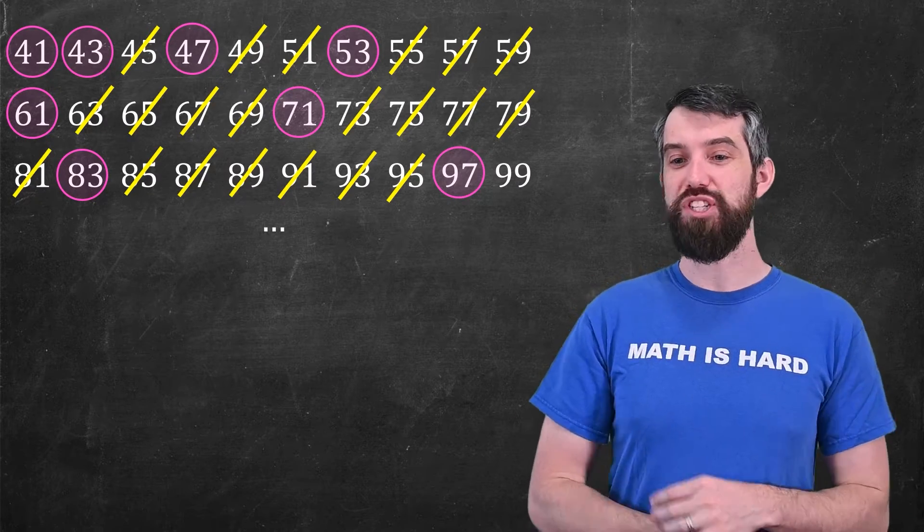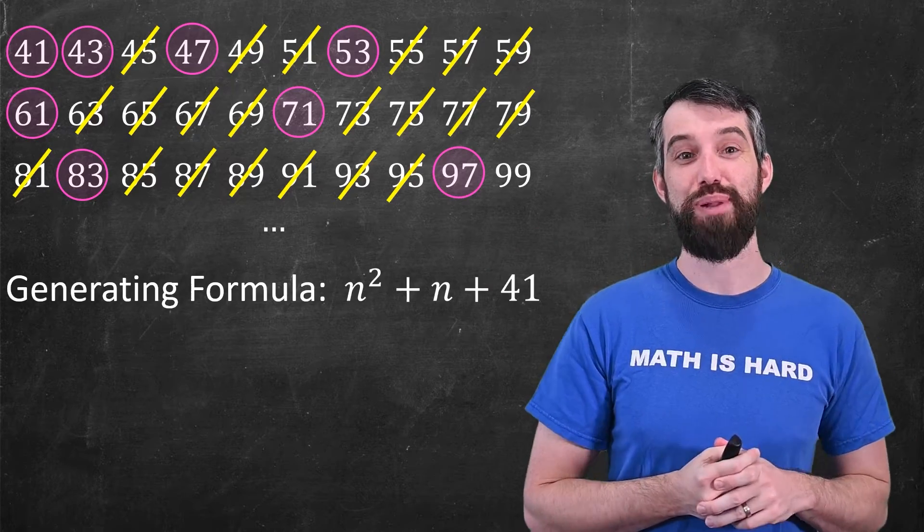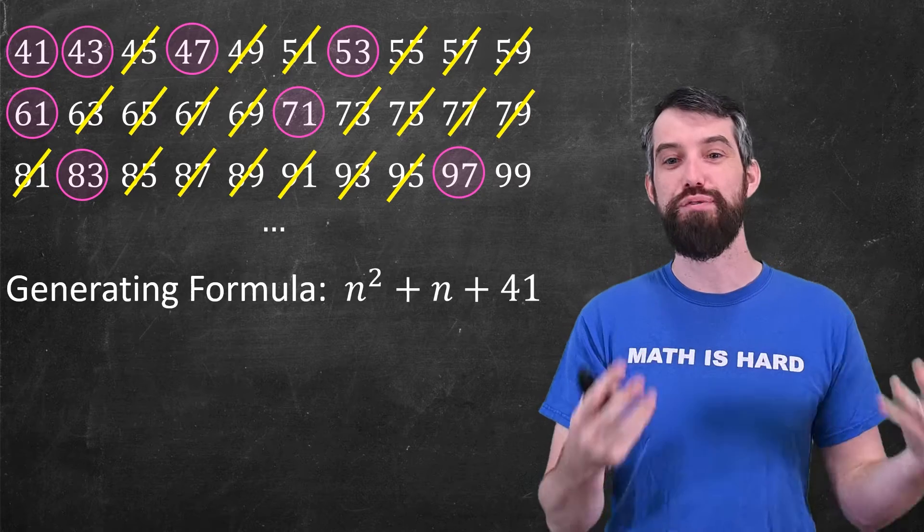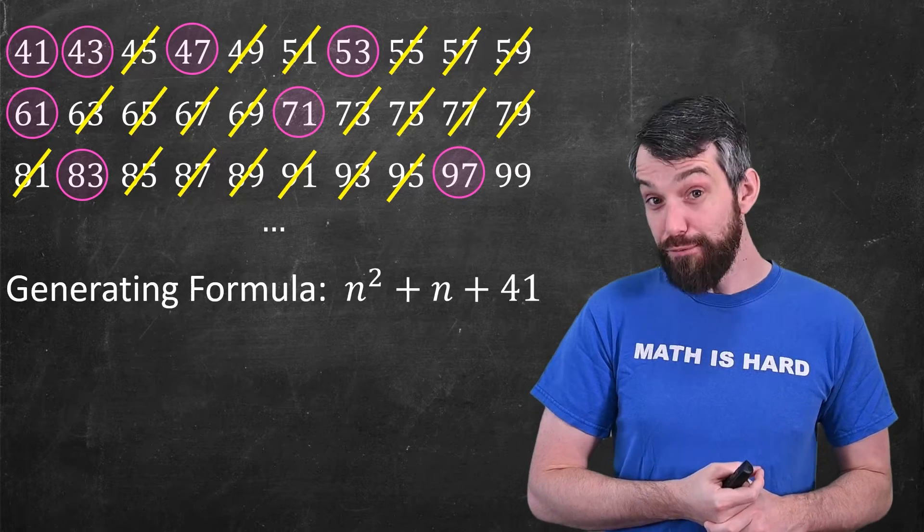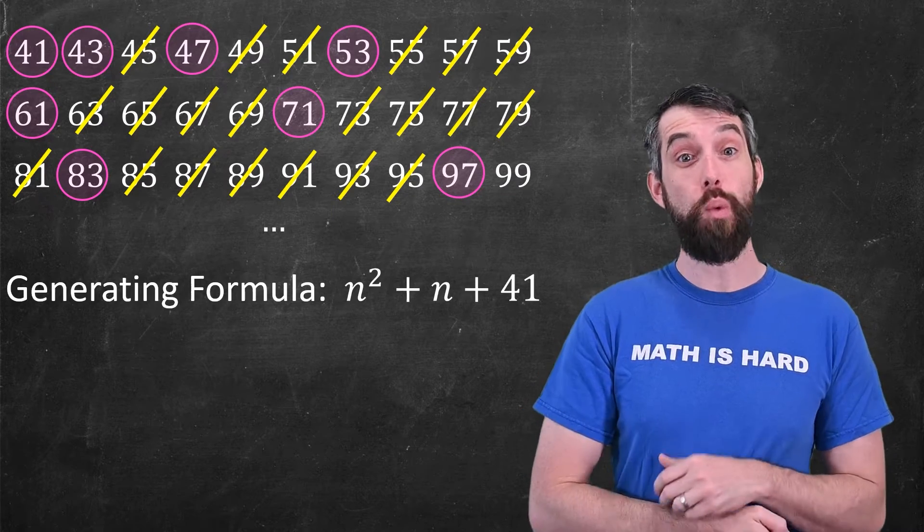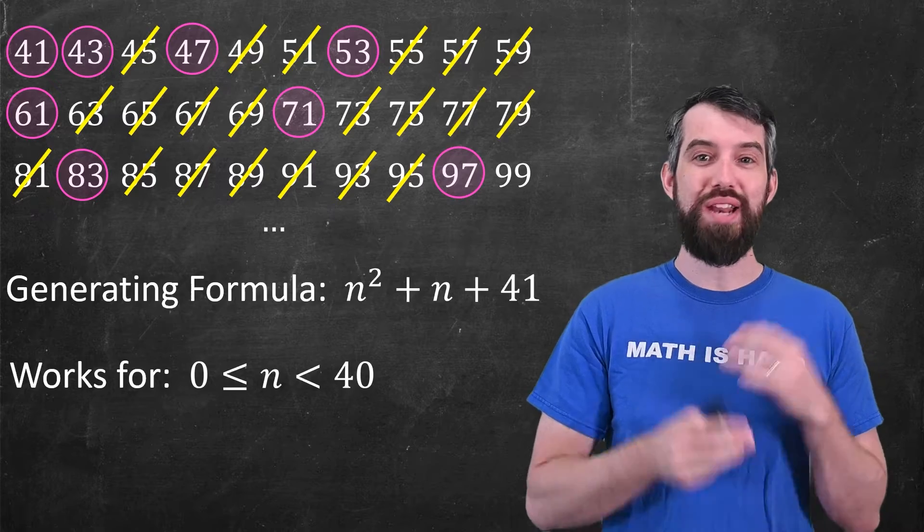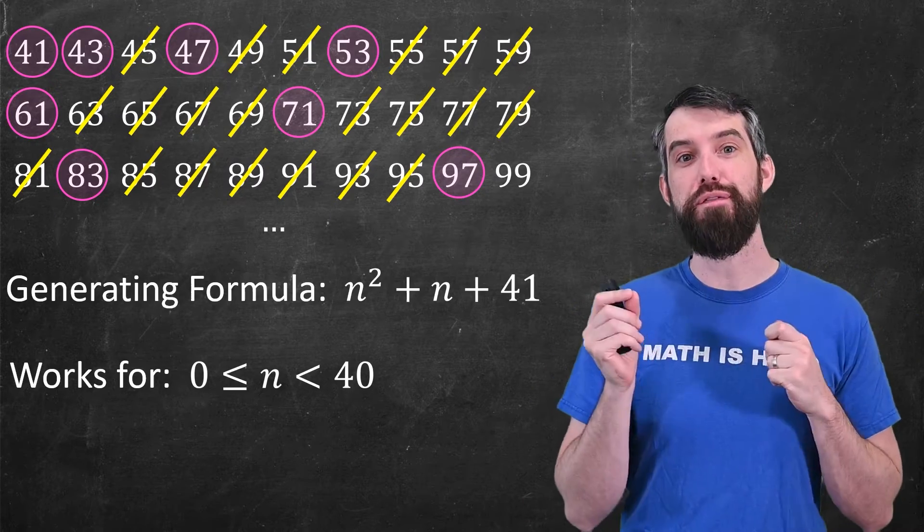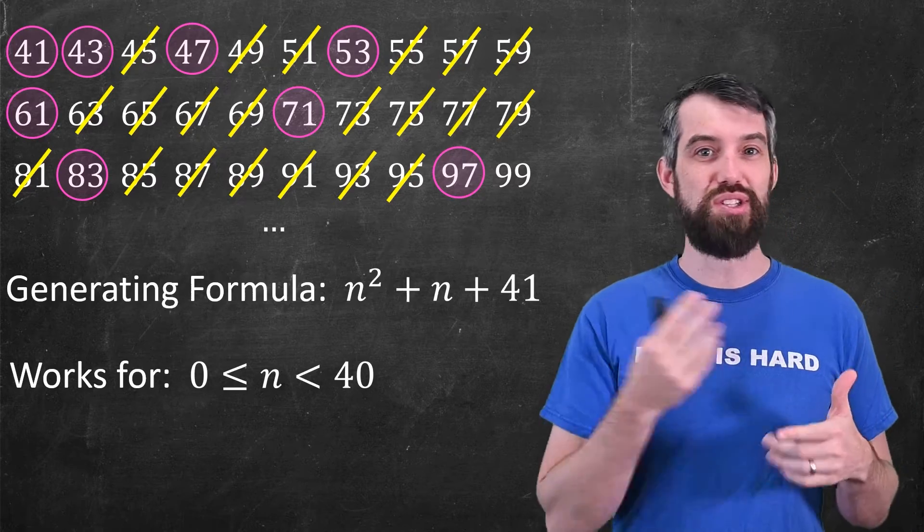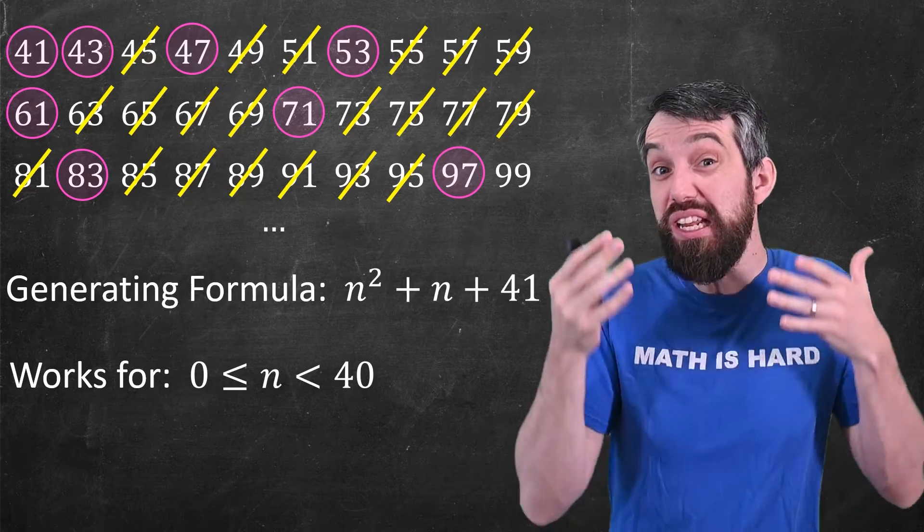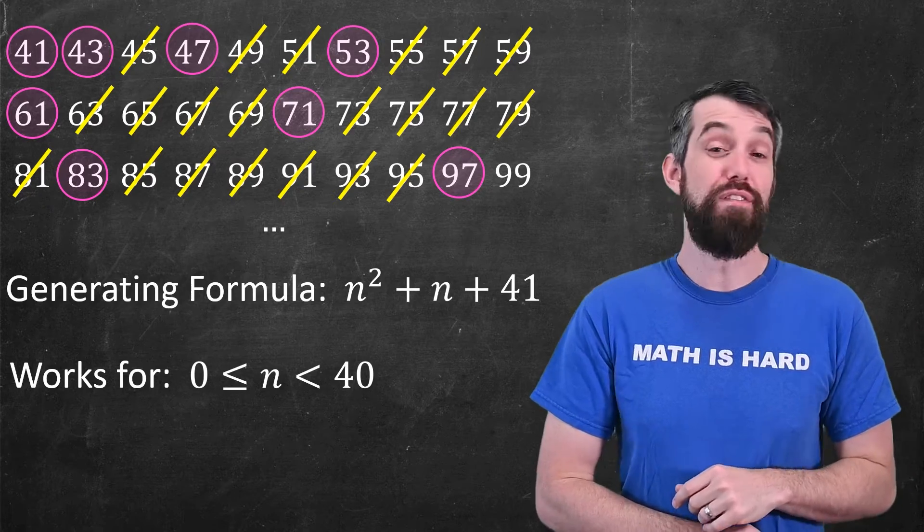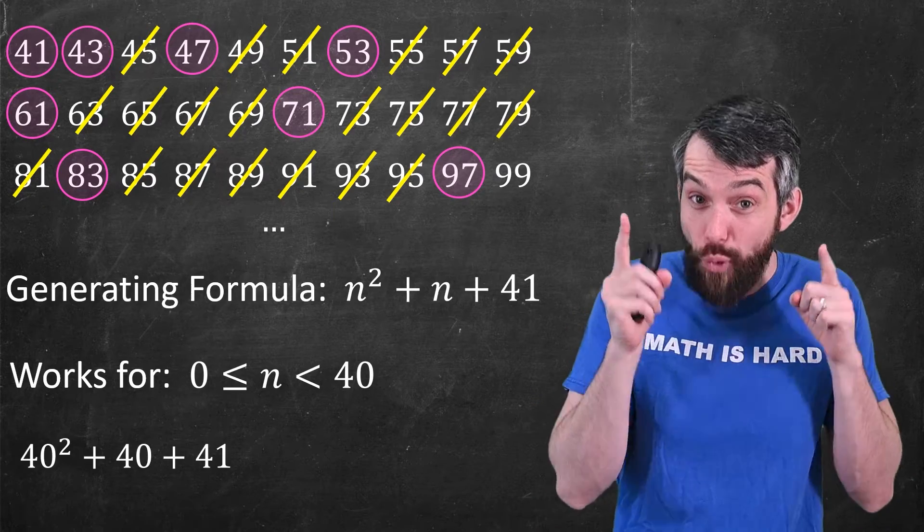There's a general formula for that, which is n squared plus n plus 41. So n equal to 0 gives you 41. n equal to 1 gives you 43, and so on. And this formula is pretty good. It works for a while. It works between n equal to 0, which gives you 41, all the way up to, but not including, 40. So in other words, you can start at 41, figure out the next 39 primes, all of them, by this formula.